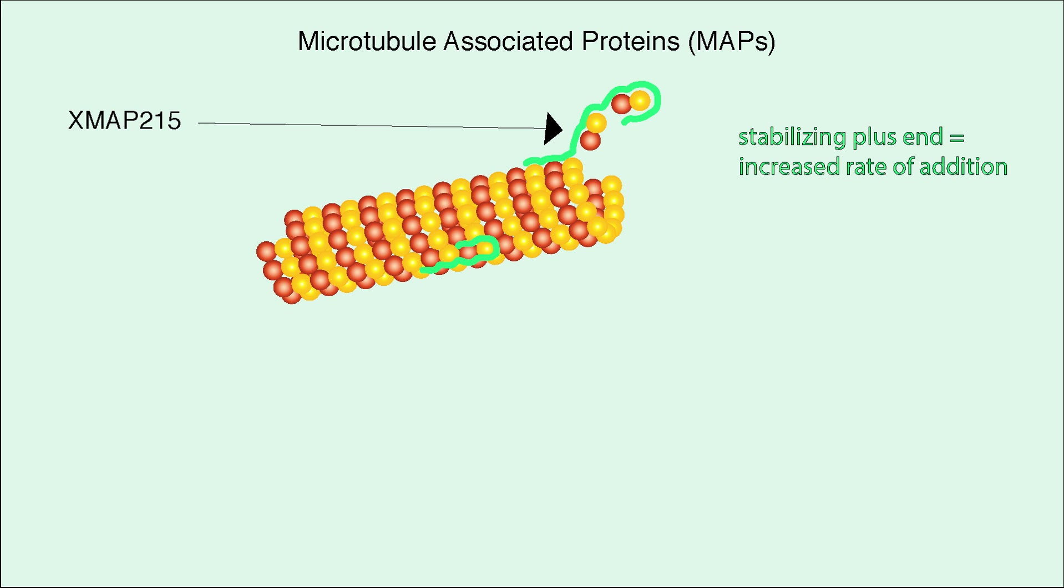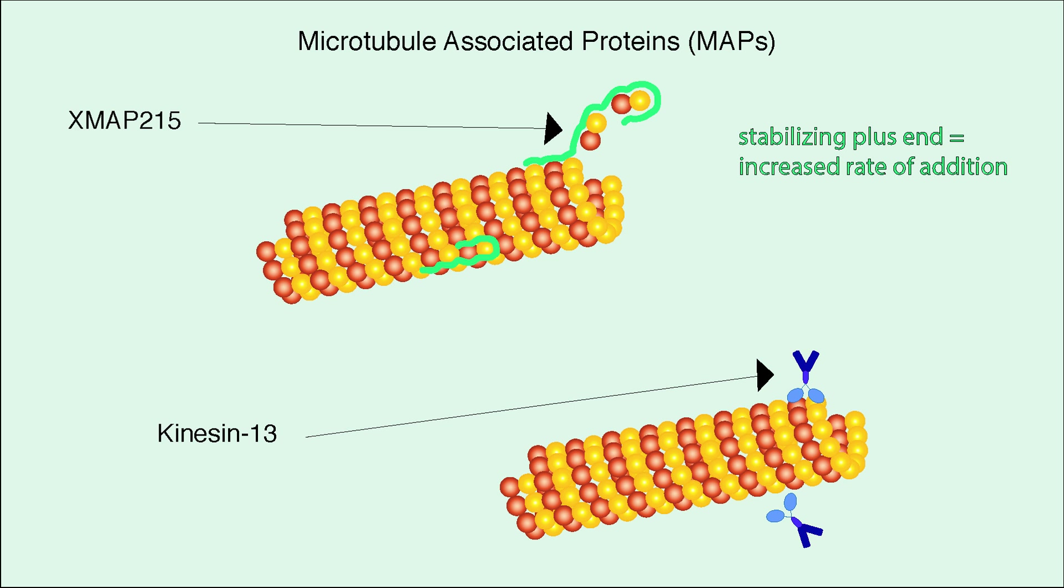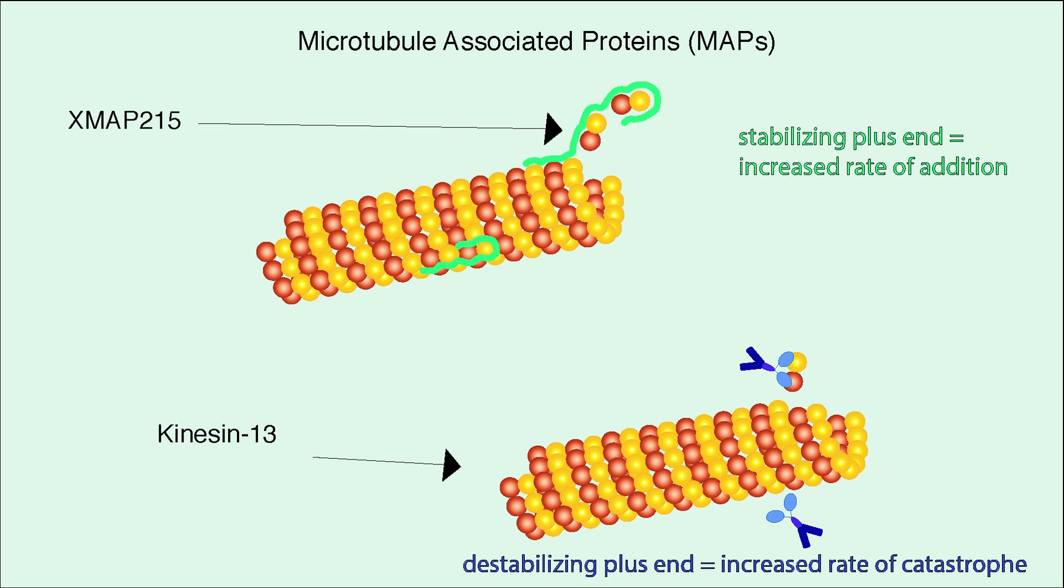Stability of the plus end is also important. Kinesin-13 binds and destabilizes the plus end, causing catastrophe even when there are GTP-bound tubulin dimers present. These proteins help regulate the lengthening and shortening of microtubules for specific cell processes.